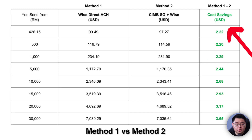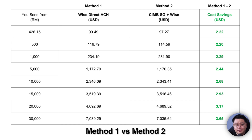On the rightmost column you'll see the final amount in USD. Comparing both methods side by side, the cost saving using the Wise ACH transfer is actually pretty minimal — around two to three dollars after conversion. I was pretty shocked by this result. If you strip off the 2 USD conversion fee for smaller amounts, the cost savings using Wise ACH are almost negligible compared to the CIMB Singapore plus Wise method. Feel free to message me on Instagram if you want the Excel spreadsheet — I'm happy to share.